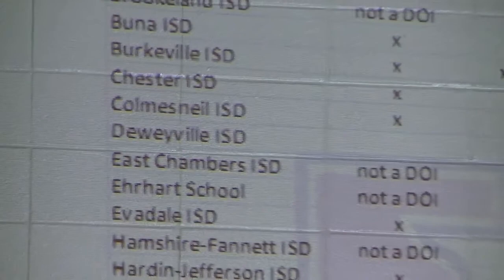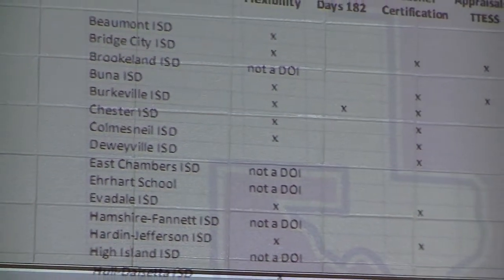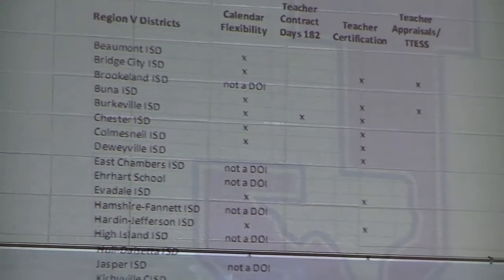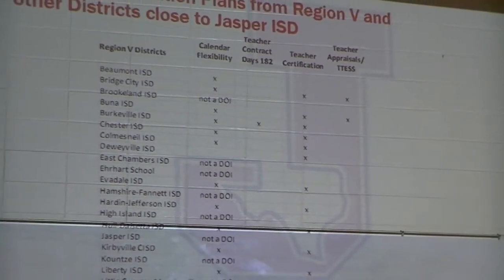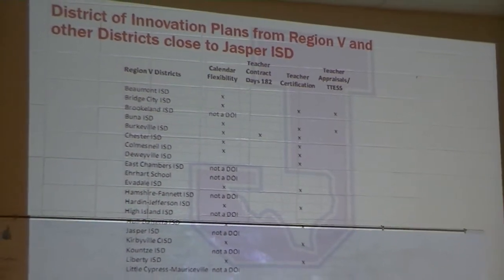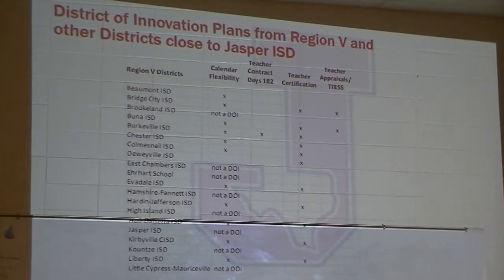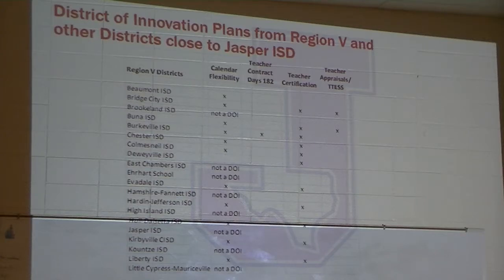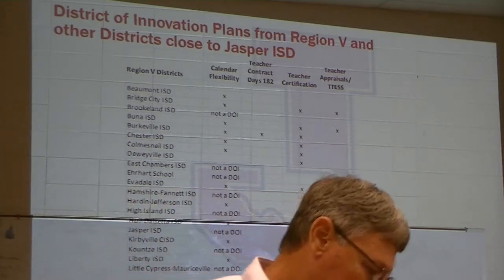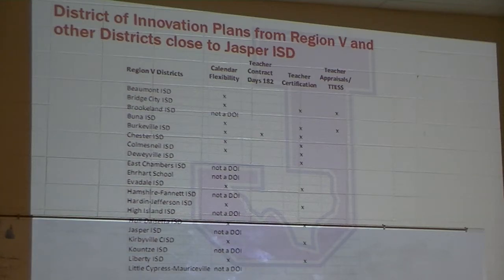I broke this down because at the last meeting we couldn't see it all. In our region — Region 5 districts — these are the ones and the things they picked. Calendar flexibility was one of them, of course, and teacher certification was the other one that a lot of them chose to put on their plans. Then this is the bottom half showing calendar flexibility was huge, and teacher certification was huge. And there was the 182-day contract.